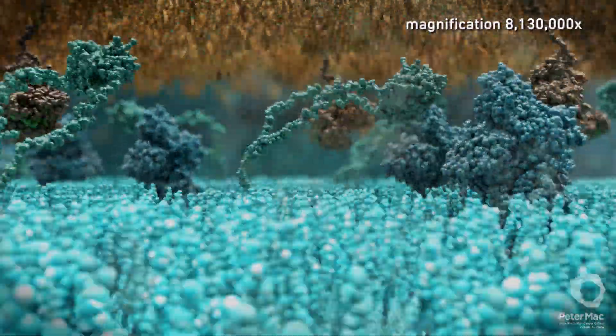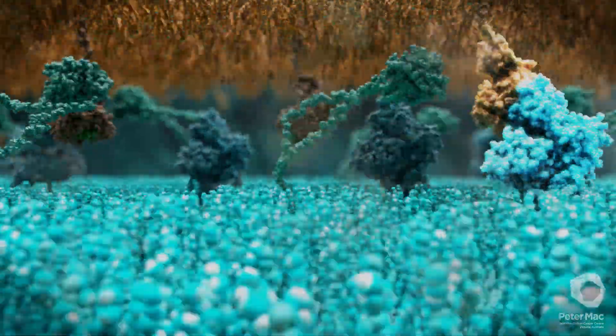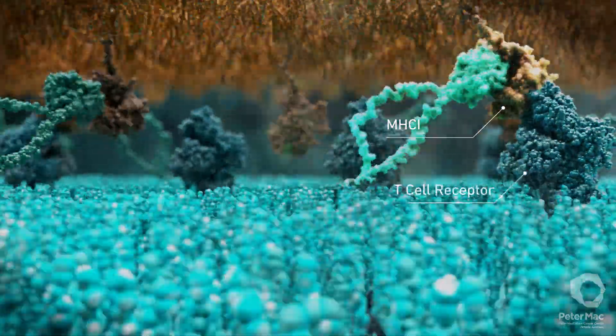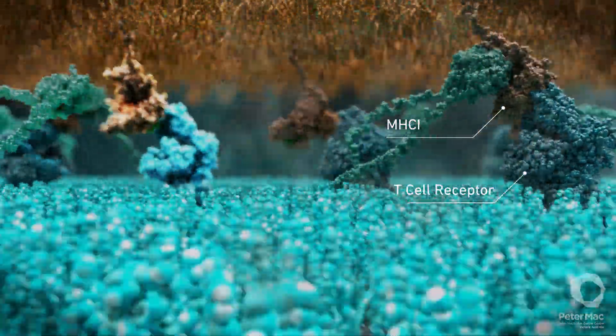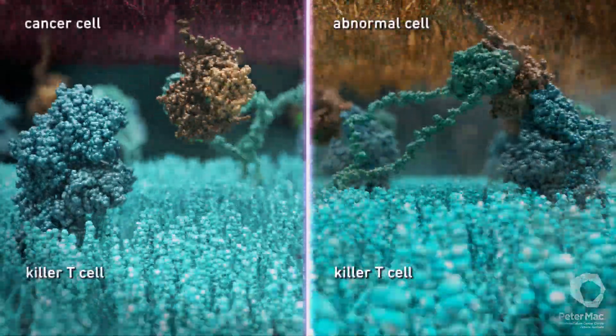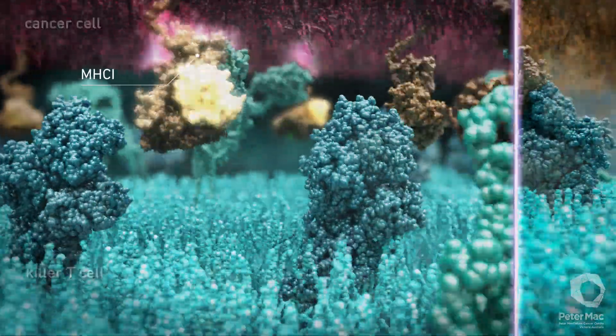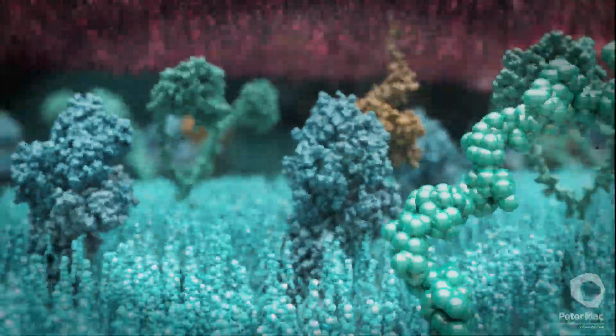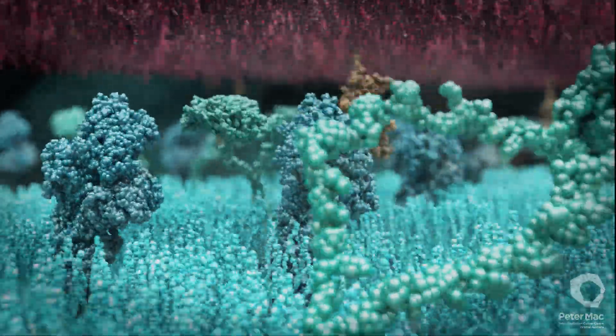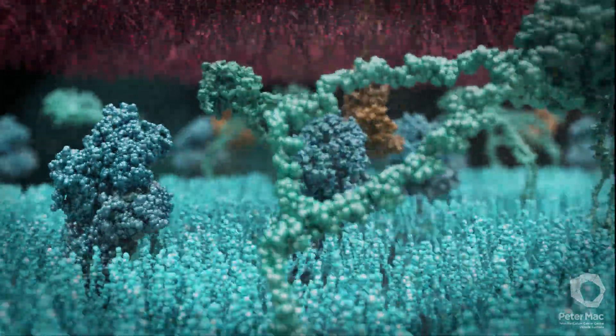Cancer cells can develop many clever ways of hiding from our immune system. One way they do this is to avoid recognition by killer T cells through MHC1 and the T cell receptor. On the left we see the surface of a cancer cell. Cancer cells can avoid recognition by reducing the number of MHC1 molecules on their surface that would normally alert killer T cells to them. This means that detection and killing of cancer cells by killer T cells is impaired.